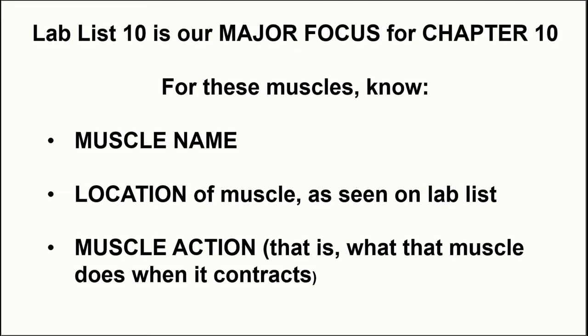Lab list number 10 is going to be the major focus of this chapter, and the bulk of the material will come from that lab list. On lab list number 10 there are 38 muscles, and for each of those 38 muscles you'll need to know the muscle name, the location as seen on the lab list, the muscle action — that is, what movement the muscle produces when it shortens or contracts.